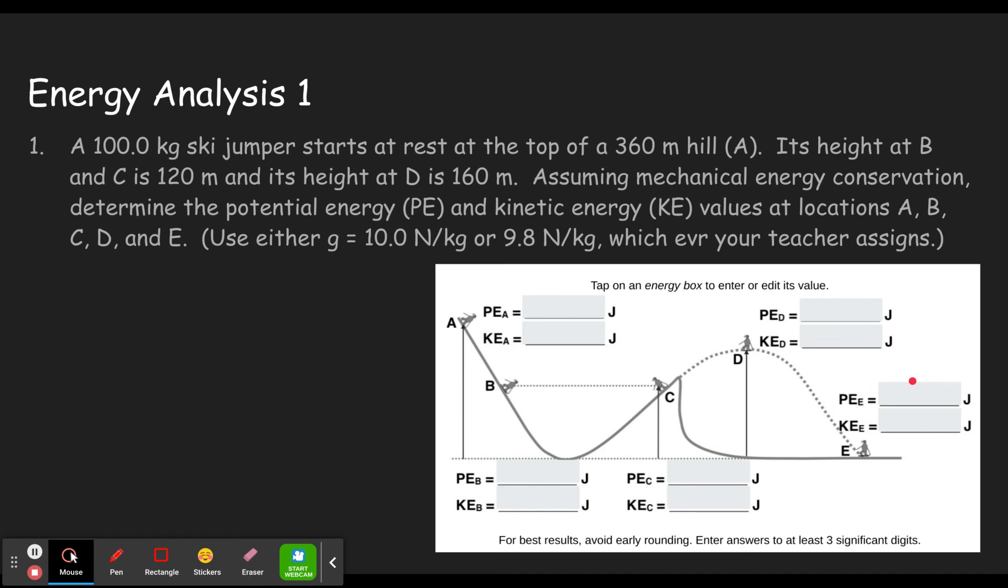So let's go ahead and get started. If we take a look here we can see that we have a 100 kilogram ski jumper who starts at rest. We'll get back to that. That's important. At the top of a hill of a certain amount of height, and that's up here at point A.